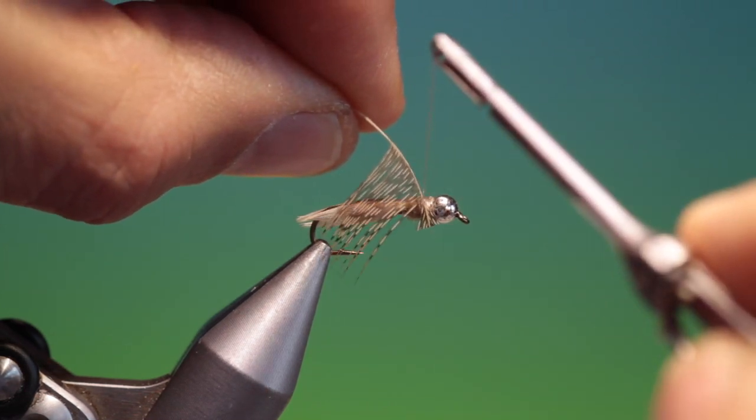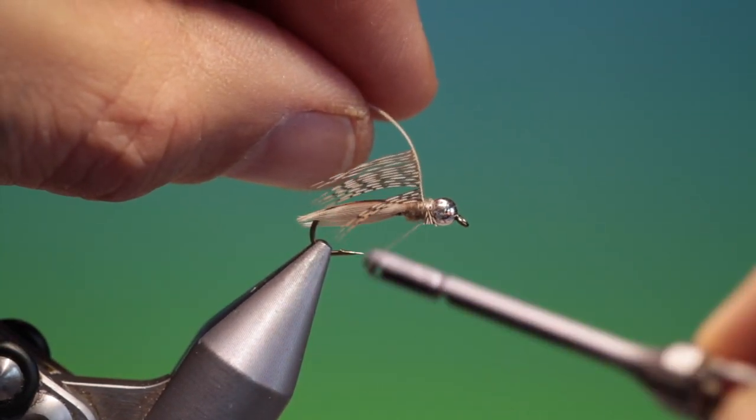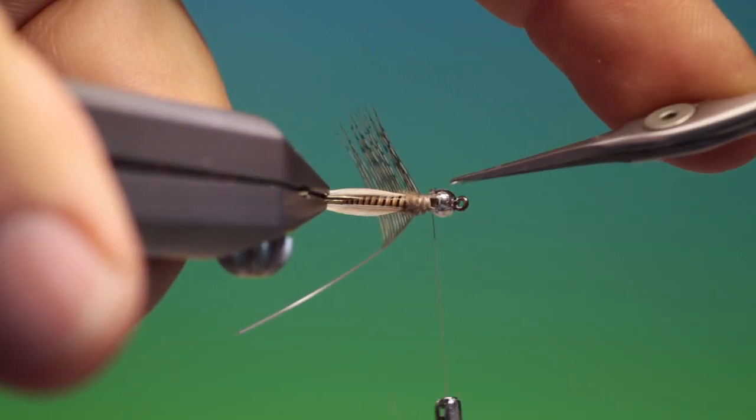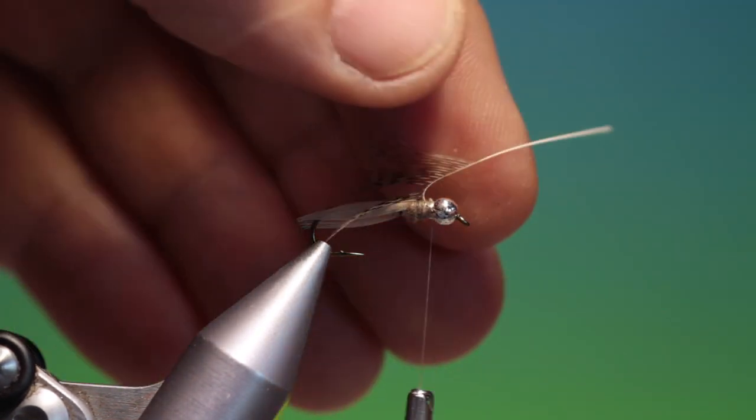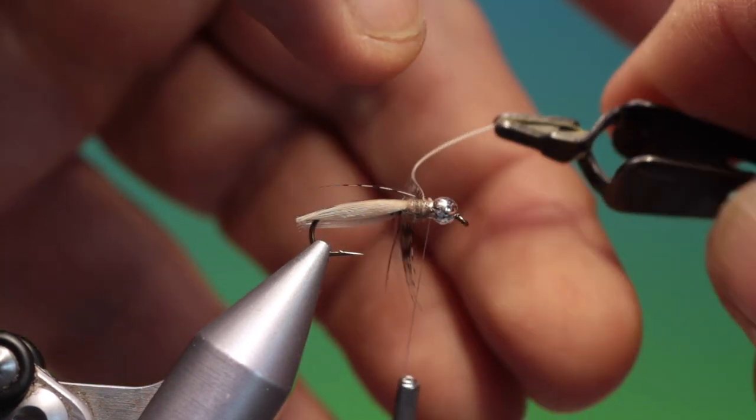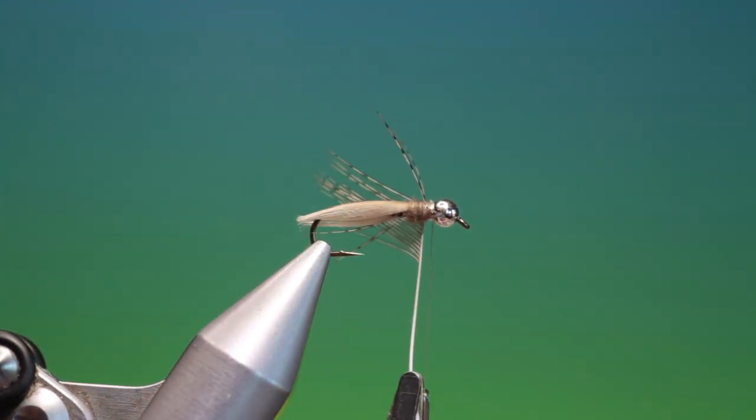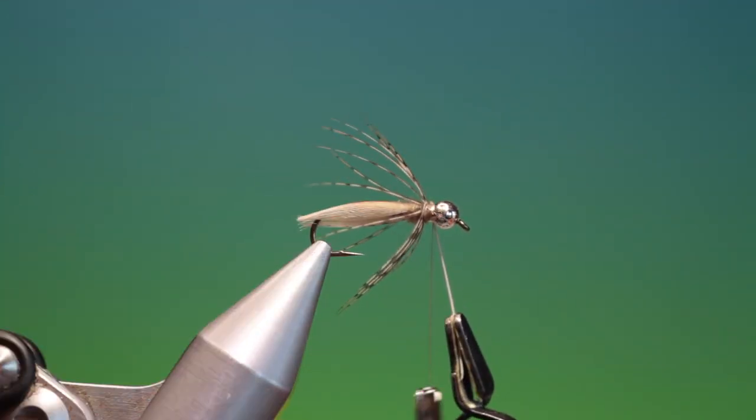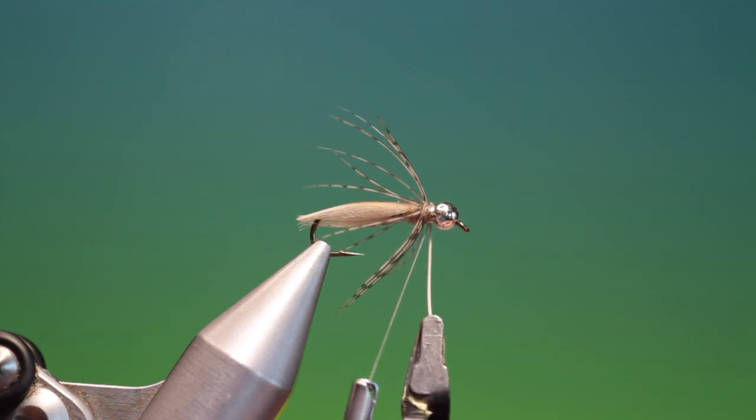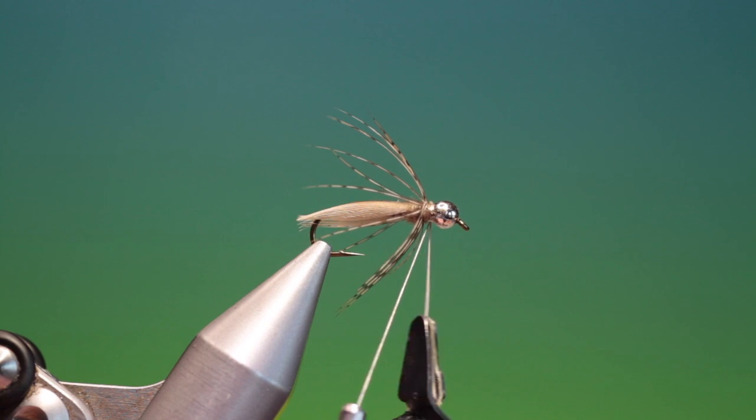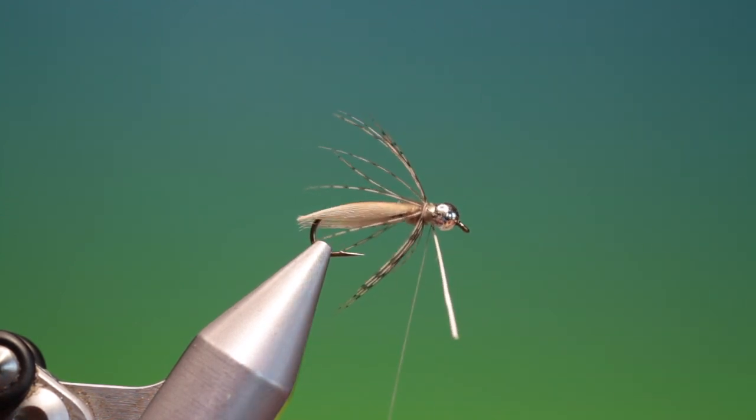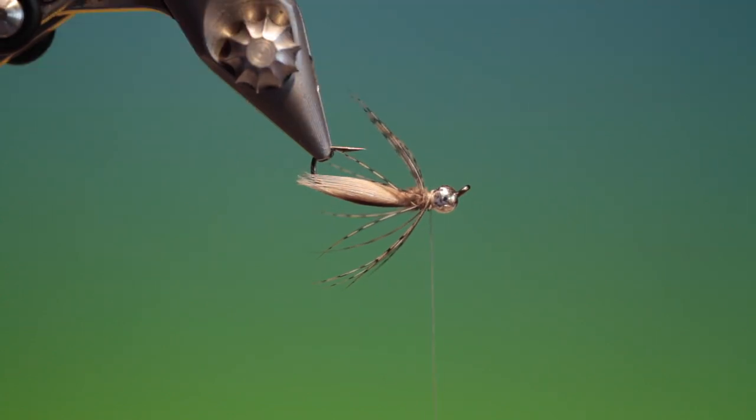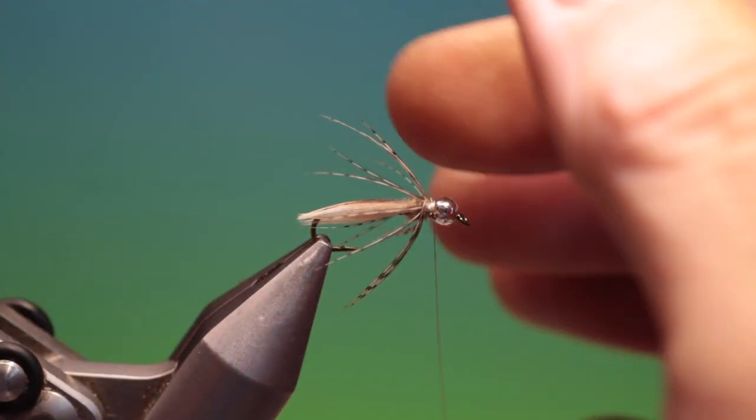A partridge hackle. And we'll just tie this one in. Like so. Trim off that. And put a hackle plier on. All I want to do here is just the faintest part of a spider hackle. And we tie off that. Remove our hackle plier. And then we can remove that. That's good.